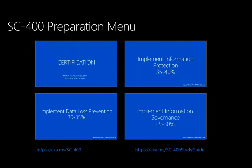We're in the first part here. We'll cover the certification a little bit. The next three recordings will cover: implement information protection — notice that percentage, 35 to 40 percent, almost half — so definitely focus on that first. The second covers implement data loss prevention, about a third, and the last is implement information governance. There are just three sections but they're all really big. Make sure you go through the exam objectives and drill down on anything unfamiliar.